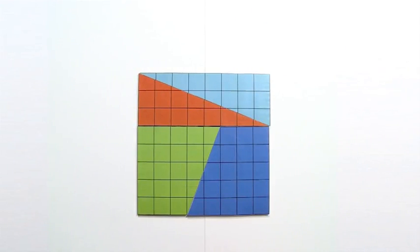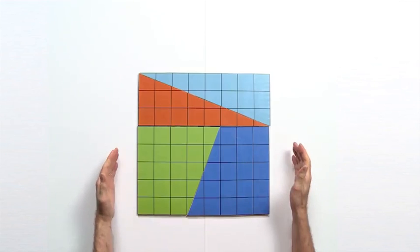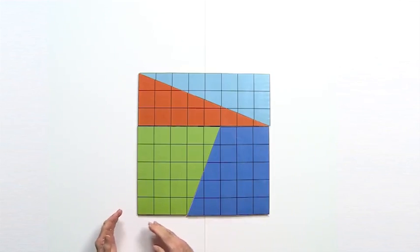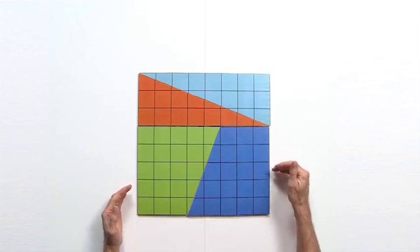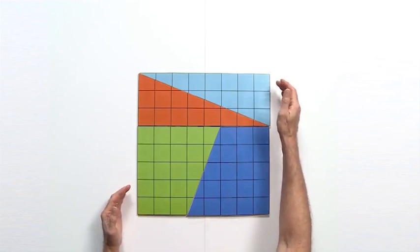In front of me, I have a puzzle called the Fibonacci Bamboozleman. The puzzle starts as a square with sides 1, 2, 3, 4, 5, 6, 7, 8 by 1, 2, 3, 4, 5, 6, 7, 8.